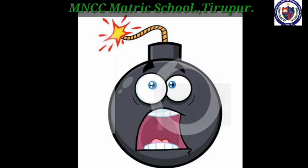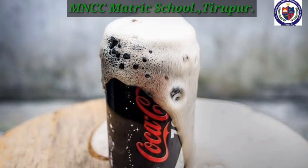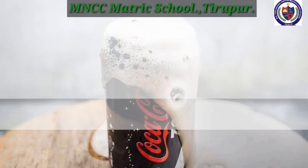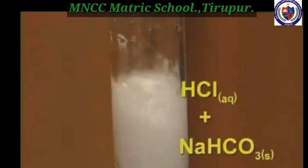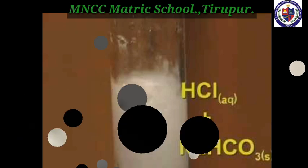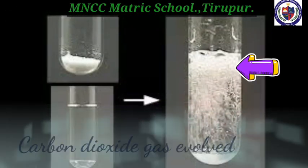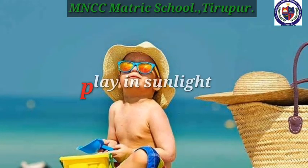Next we move to evolution of gas, change in color, and change in state. In addition to the above effects, certain other effects may also take place as a result of chemical reactions. Number one, evolution of gas. What happens when you open a soda bottle? You can see air bubbles coming out of soda water. Similarly, gas evolution may take place as a result of chemical reactions. For example, when dilute hydrochloric acid is added to a solution of sodium carbonate or sodium bicarbonate, carbon dioxide gas is evolved.